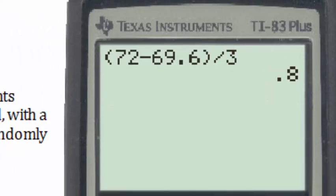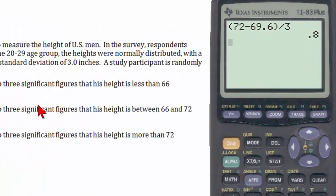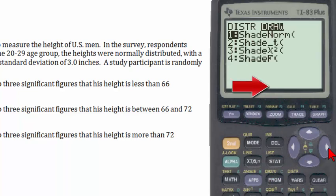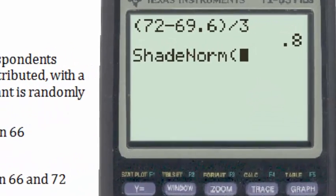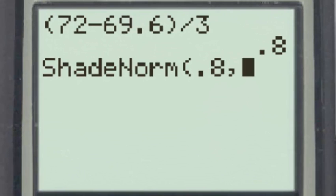We will do this problem using method 1, where we actually draw the normal distribution by going to the shade normal function: second, distribution, arrow, enter, and then inputting the z-score for 72, which is 0.8, and the TI-83 understanding of infinity, which was e, engineering exponent, 99.